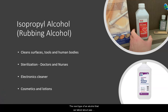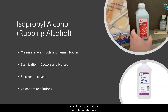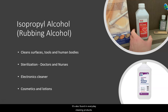The next type of alcohol we talked about was isopropyl alcohol, or rubbing alcohol. This is our sterilization type of alcohol, and it's used for cleaning surfaces, tools, and human bodies. Doctors and nurses use it quite often to rub an area where they're going to inject a needle, making sure that the area is sterile and clean. Because it evaporates very fast, it's a popular choice for cleaning electronics, and it's also found in everyday cleaning products and cosmetics and lotions.